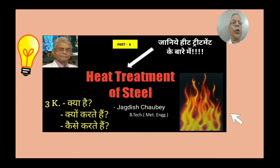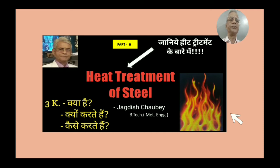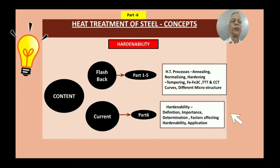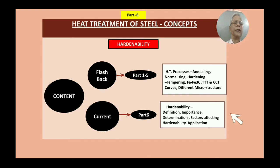Hello friends, welcome to my channel Jagdish Shove, where I am going to present Part 6 on Heat Treatment of Steel. This part is basically on Hardenability. As a flashback, Parts 1 to 5 covered different heat treatment processes — annealing, normalizing, hardening, and tempering — along with important diagrams like the iron-iron carbide diagram, TTT curves, CCT curves, and different microstructures produced. The current Part 6 on Hardenability will cover: definition, importance, determination, factors affecting hardenability, and application.